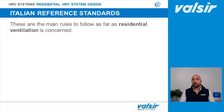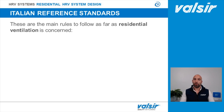We then enlisted in the second episode all the components needed for the whole system that are present in the Valsir catalog, such as recovery unit, pipes, filters, inlets and outlet grids, and accessories. In this last episode we're going to go through the HRV system designing process for residential buildings, from the very beginning to some installation tips.